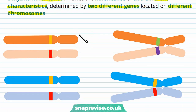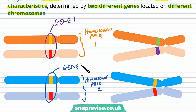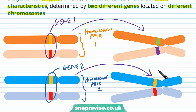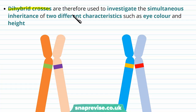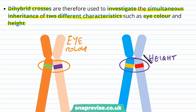We can have one homologous pair of chromosomes where we have a particular locus coding for a gene, and a different pair of homologous chromosomes coding for a separate gene, each coding for a separate characteristic on separate chromosomes. In dihybrid inheritance we're looking at how each of these two genes is inherited into the offspring's chromosomes. We use dihybrid crosses to investigate the simultaneous inheritance of two different characteristics, for example eye colour and height.